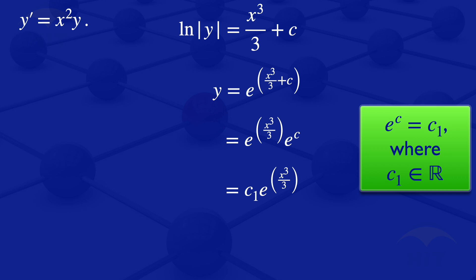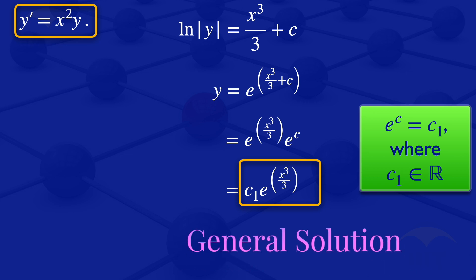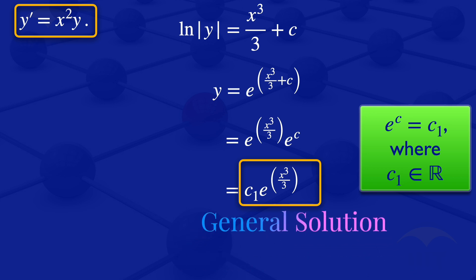So what we are having there is the general solution of this ODE. Y prime equals X squared Y is C1 multiplied by exponent of X cubed over 3. So that's the general solution of that ODE.